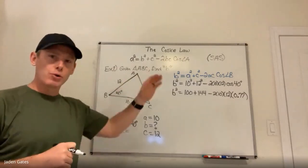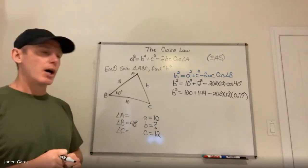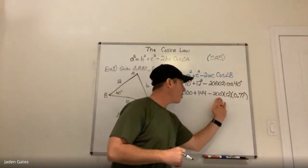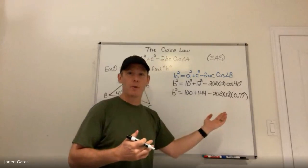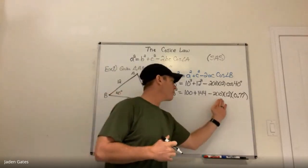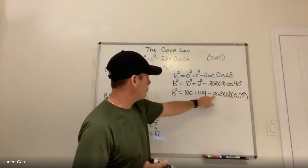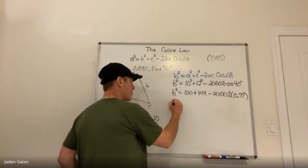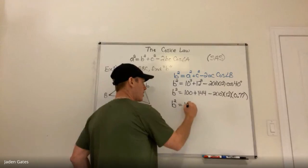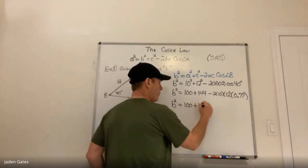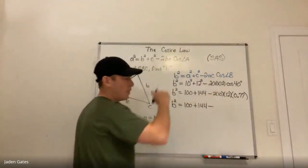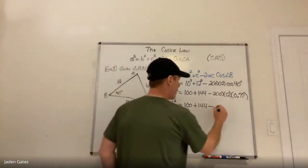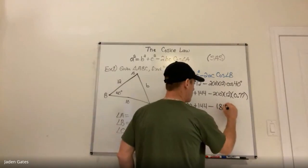This is where most students make a mistake with the cosine law — not following BEDMAS. I have to multiply next, so I'm going to multiply these four numbers: 2 times 10 times 12 times 0.77. So b squared equals 100 plus 144, and multiplying those four numbers gives me 184.8.